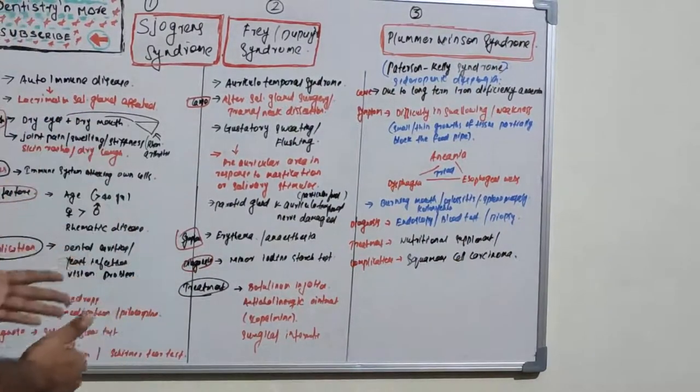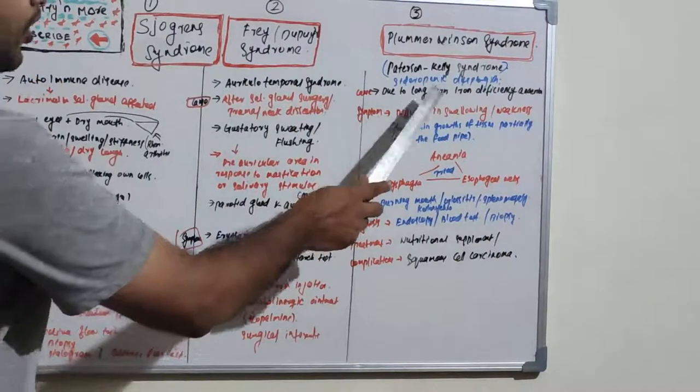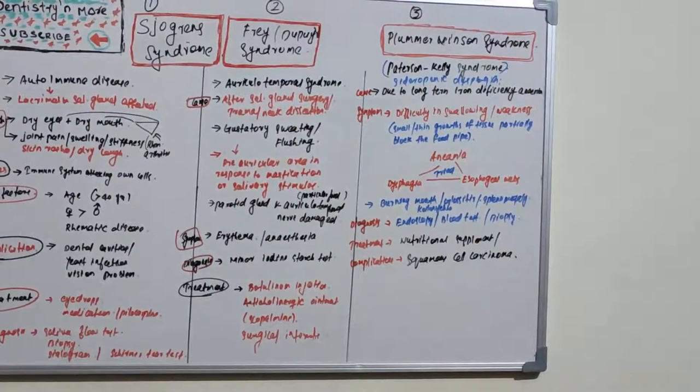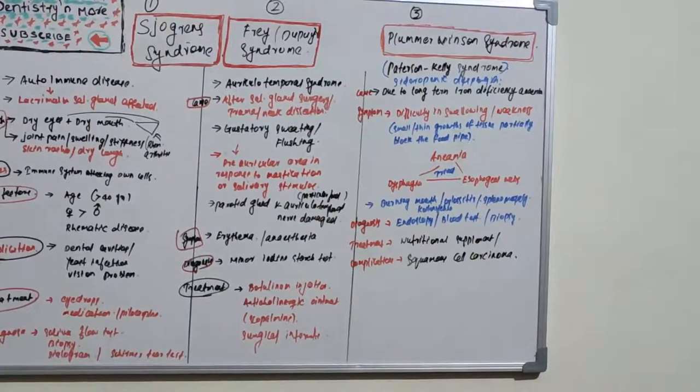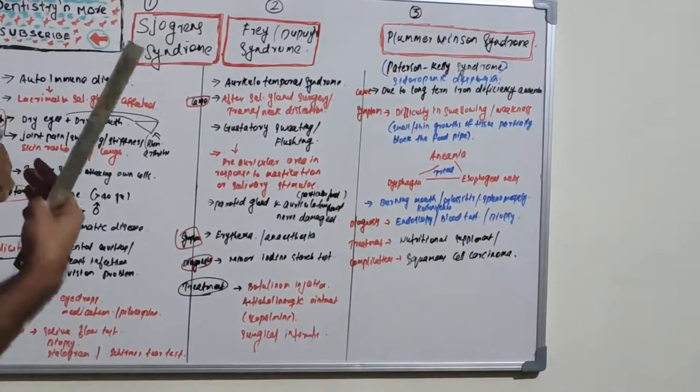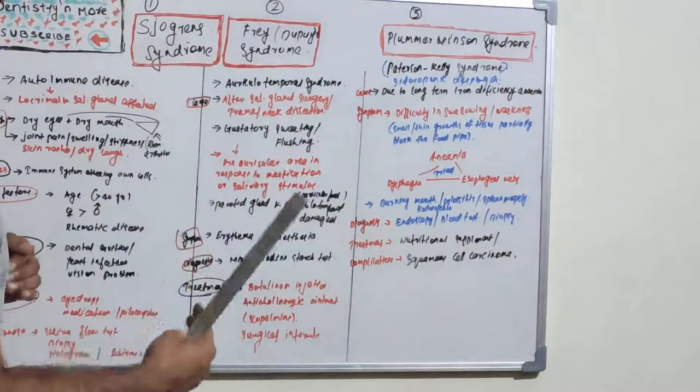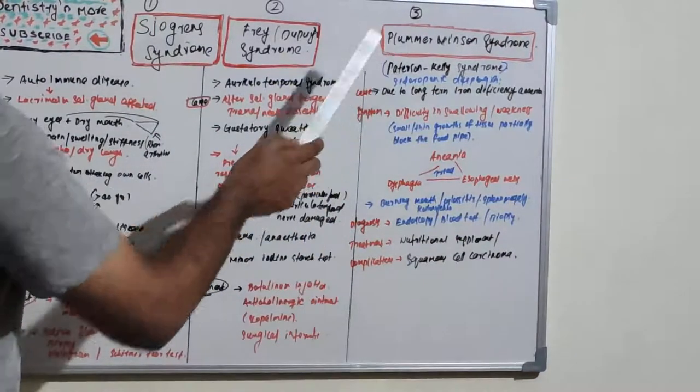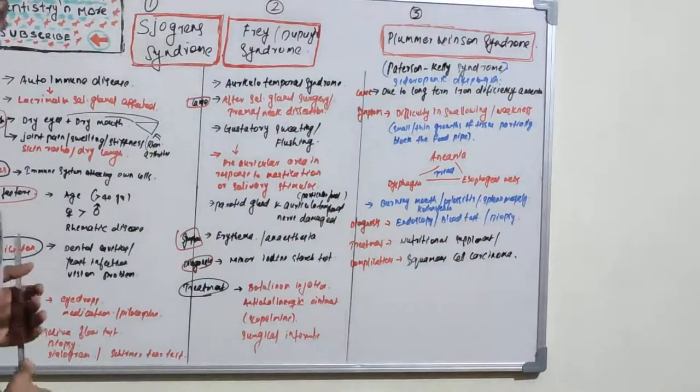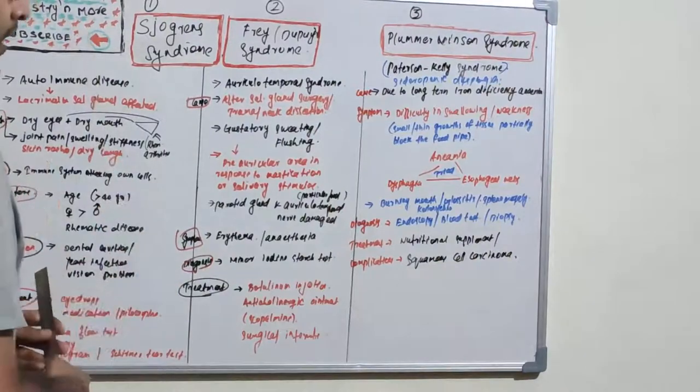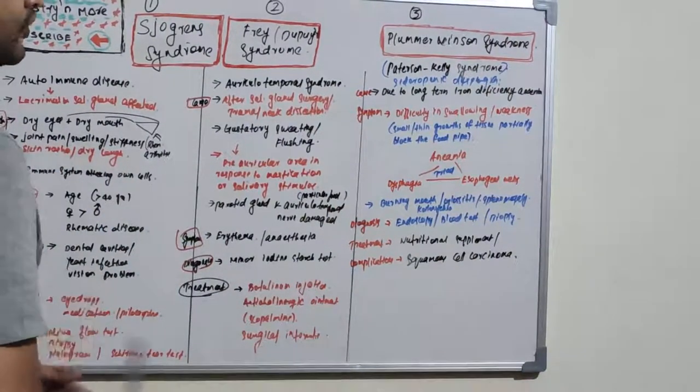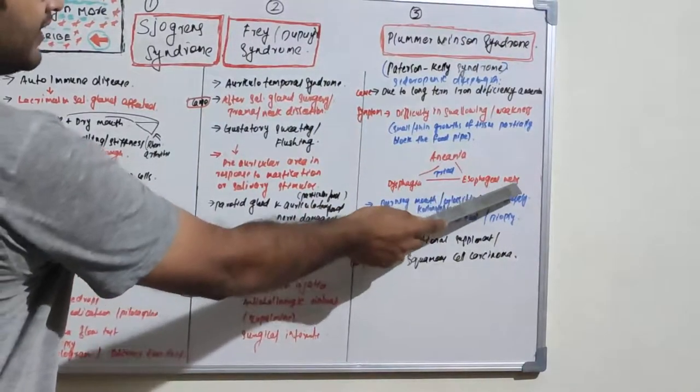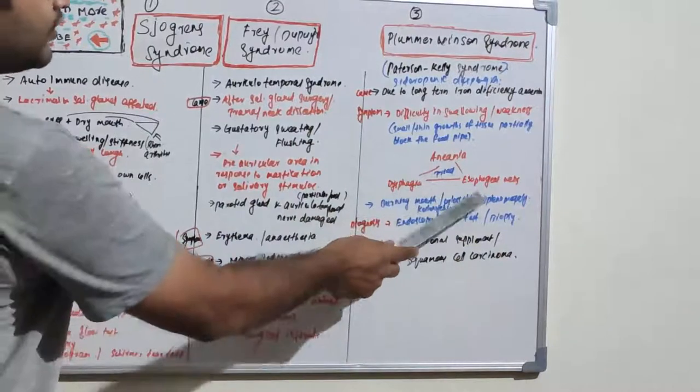It is also known as sidropenic dysphagia. Dysphagia is difficulty of swallowing. Why is this happening? This is due to long-term iron deficiency anemia. Iron is a very vital nutrient for our body. When iron is deficient and anemia lasts for a very long period, it might result in Plummer-Vinson syndrome. It has a peculiar triad: anemia, dysphagia, and esophageal webs.